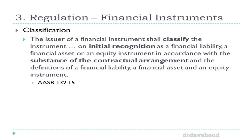An entity must classify an instrument on initial recognition as a financial liability, financial asset, or equity instrument in accordance with the substance of the contractual arrangement — not what it's called. Preference shares may be equity or may not be equity. What is critical is the actual arrangement and its substance. Does it include a contractual right to pay cash? If so, it looks like a liability, not necessarily equity.